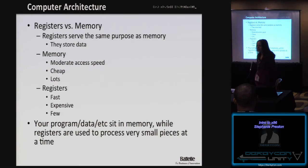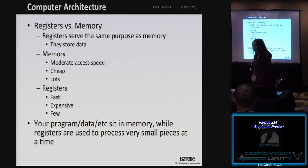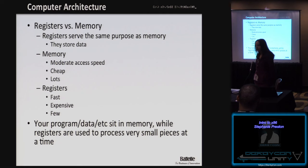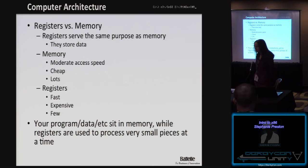Registers versus memory. Registers technically serve the same purpose as memory — their whole purpose is to store data. But memory has moderate access speeds, and because it's not on the CPU, there's a fetch delay going through the memory controller hub. It's cheap to produce, so computers typically have a lot of it. Registers are extremely fast to access because they're inside the CPU, but they're extremely expensive to produce, so there tend to be very few of them. Your program data typically sits in memory, while registers are used to process small pieces of your application at any given time.